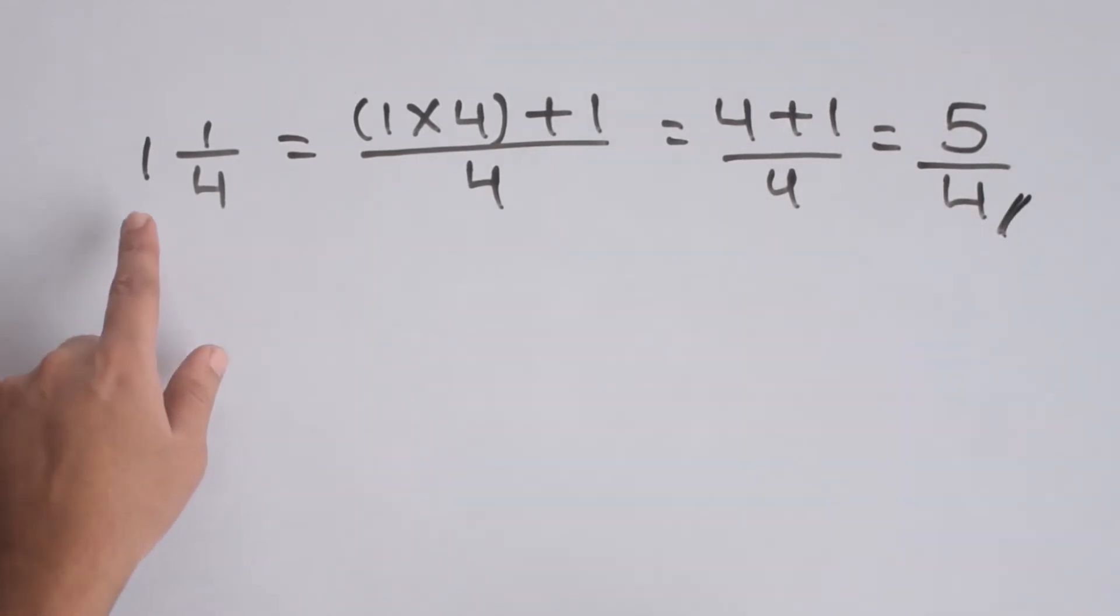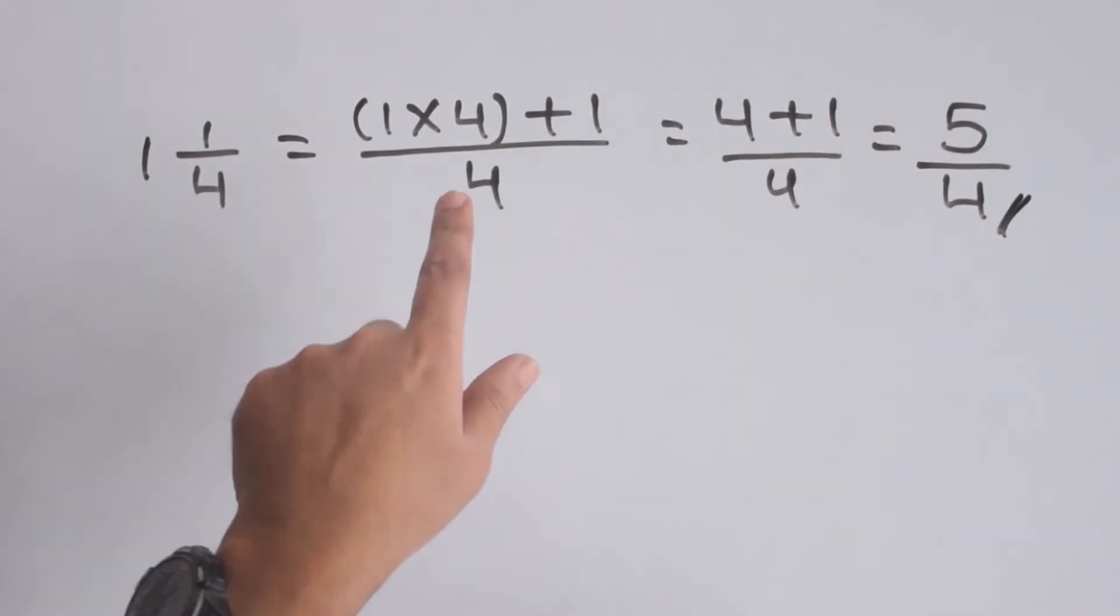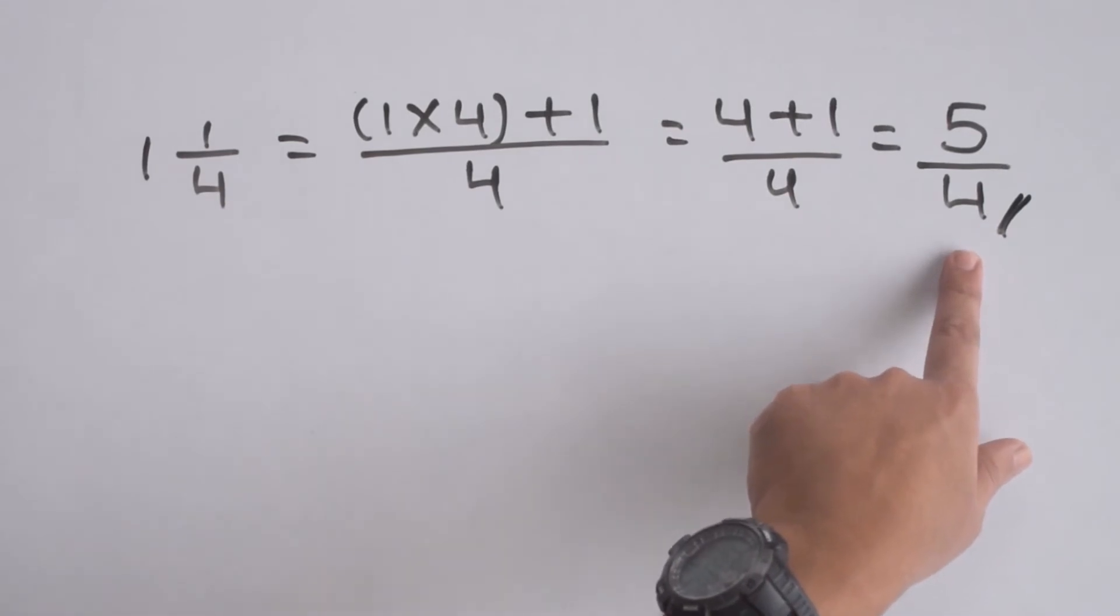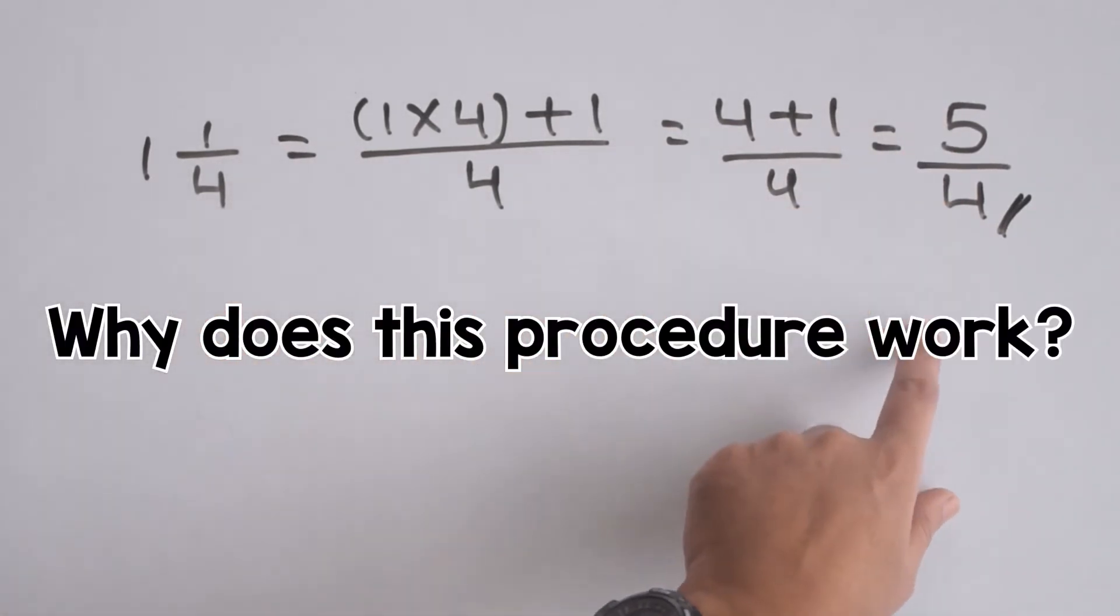We easily converted 1 1/4 to the improper fraction 5/4. It's improper because the numerator is bigger than the denominator. But why does this procedure work?